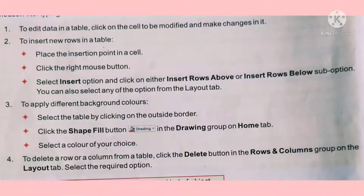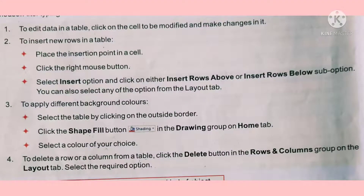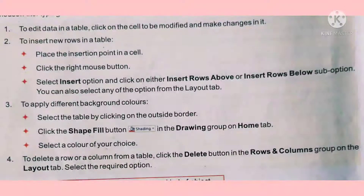To insert new rows in a table, place the insertion point in the cell, then right-click the mouse button. Select the insert option, then click either insert row above or insert row below. You can also select any of these options from the layout tab.